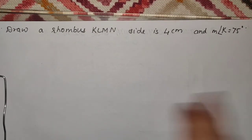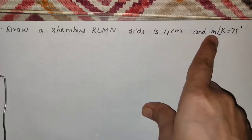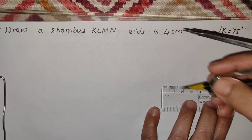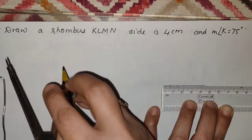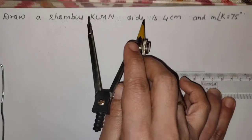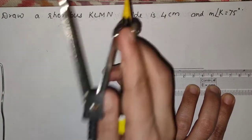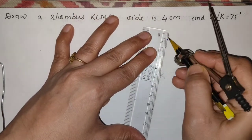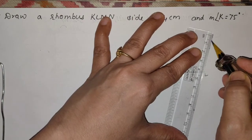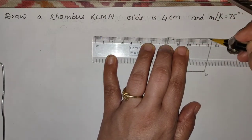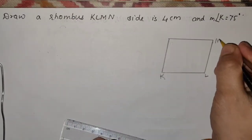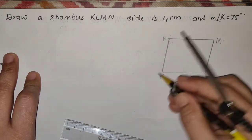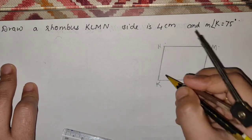Now we will move to the next sum. Draw a rhombus KLMN — side is 4 cm, angle K is 75 degrees. We know यहाँ rhombus है तो properties दी नहीं हैं — हमको खुद याद करनी है। Rhombus की property: all sides are equal. Rhombus में 90 degree angle नहीं होती। Rhombus के angles की property — opposite angles are congruent। So angle K is 75°, and opposite angle M is also 75°।